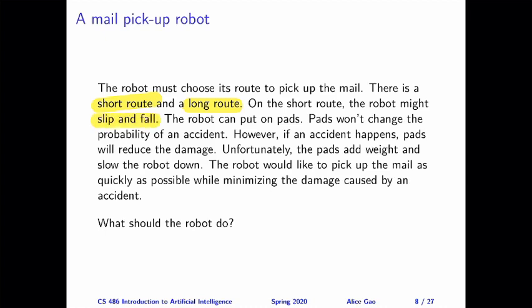The robot has an option of putting on pads. Putting on pads won't change the probability of an accident — it still might or might not happen depending on the probabilities. However, if an accident happens, putting on pads will help reduce the damage, the severity of the damage. If an accident happens and the robot puts on pads, then the damage is less severe, so the robot is a little happier.